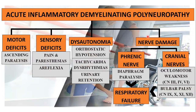As for nerve damage, when the phrenic nerve is damaged, that would lead to diaphragm paralysis. As for the cranial nerves, oculomotor weakness involves cranial nerves 3, 4, and 6, and bulbar palsy involves cranial nerves 9, 10, 11, and 12. This would cause difficulty expectorating secretions and could trigger aspiration pneumonia, further aggravating the respiratory failure brought about by paralysis of the diaphragm.